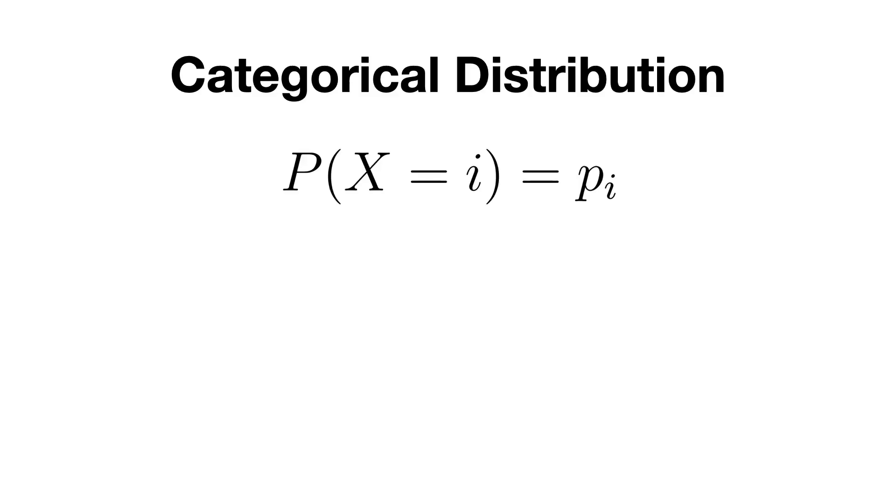The probability of observing an outcome is simply P(X = i) = p_i, where p_i is the probability associated with the ith outcome, and sum from i equals 1 to n of p_i must equal to 1.